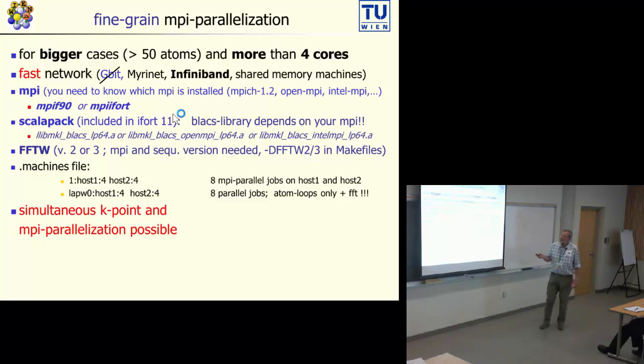One word of warning: when you use ScaLapack, you have to define a BLACS library, and this BLACS library depends on the version of your MPI. In order to make a successful compilation of Wien2K with MPI, you need to know which MPI of those versions you really have installed on your system. If you don't know it yourself, ask your system administrator. You cannot compile Wien2K without knowing which MPI you actually have, because you have to change the name of this library according to which MPI you have.